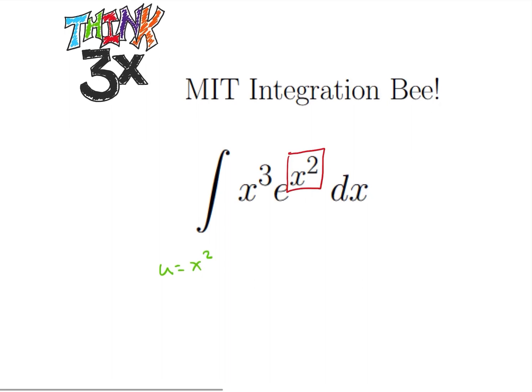So when we do that, we have du is equal to 2x dx. So that x dx is equal to du over 2. So let's see what happens.